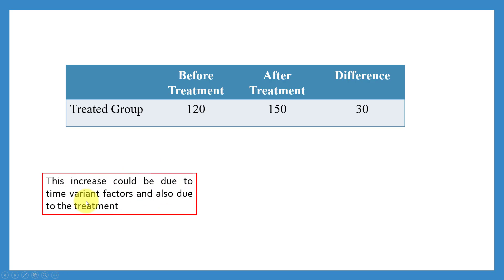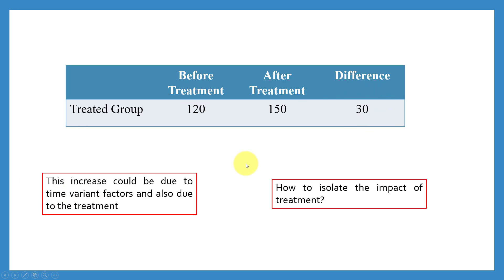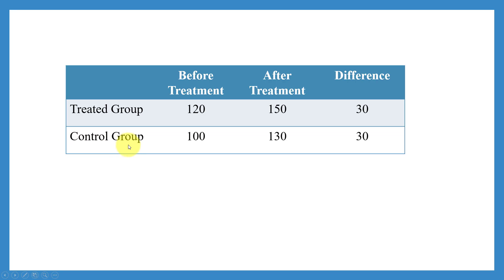However, this increase could be due to time-varying factors. For example, during that time period, production may have increased anyway — perhaps temperatures got better or the factory environment improved. So this increase might not be entirely due to the treatment; it can also reflect factors that are changing with time. What we need to do is isolate the impact of the treatment by removing the impact of time-variant factors, and we do that by introducing a control group.